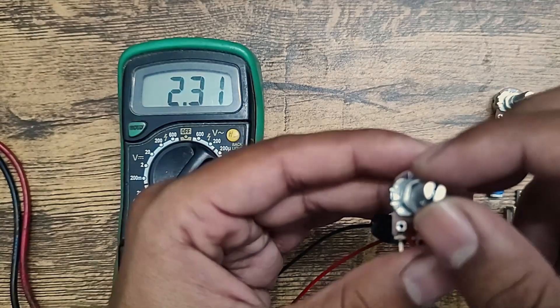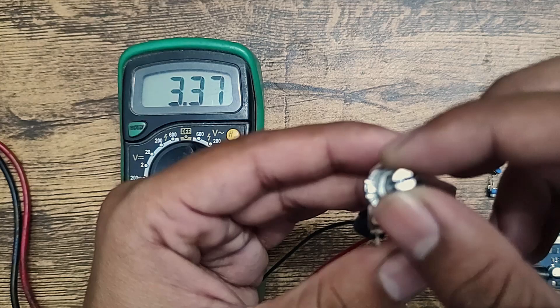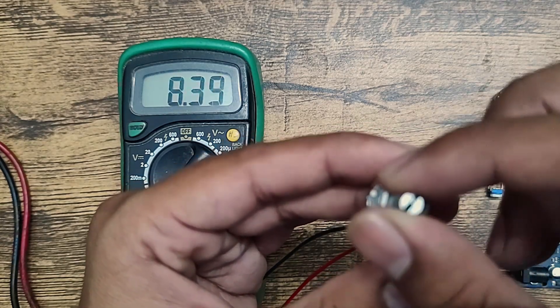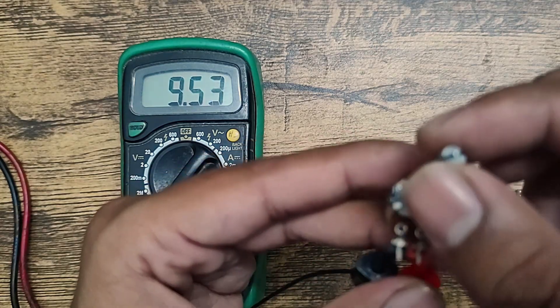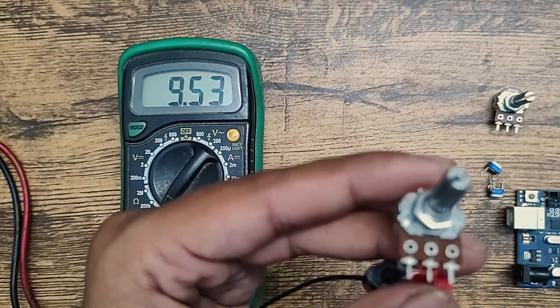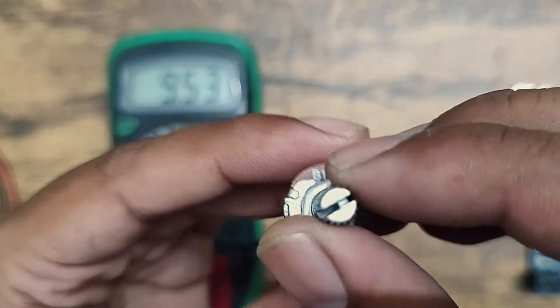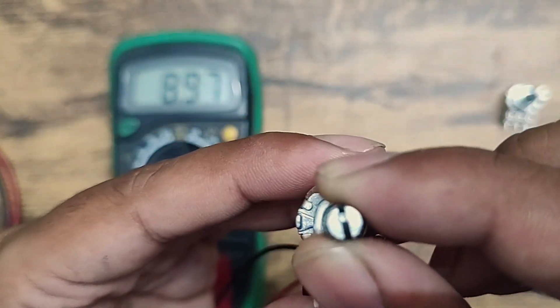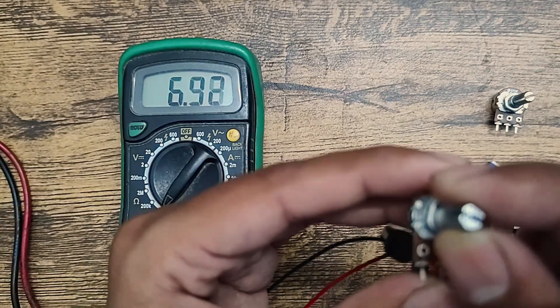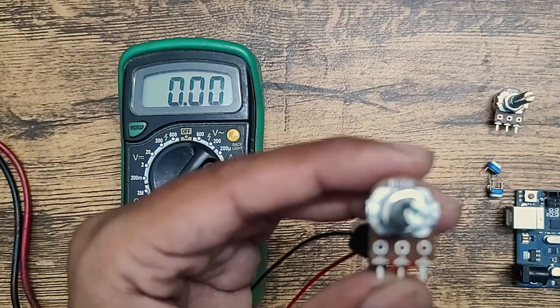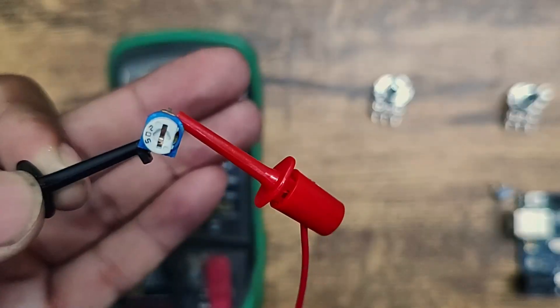And as you can see that the value of resistance is also increasing. So the maximum value of this resistance is 9.53. Now I will decrease it and see that value is also decreasing.